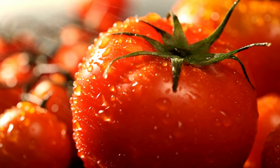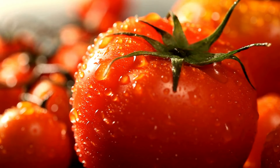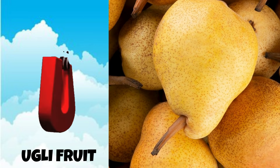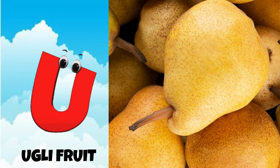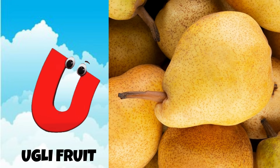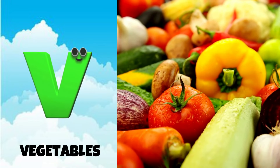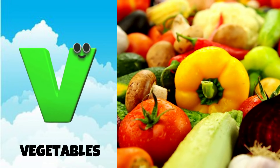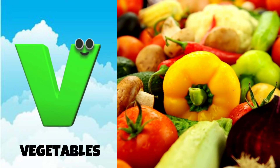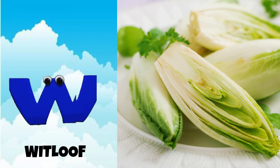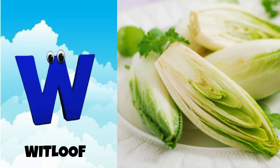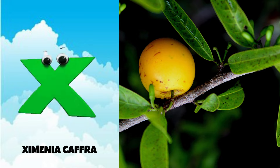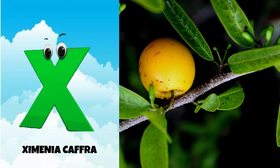U is for ugly fruit, uh, uh, ugly fruit. V is for vegetables, v, v, vegetables. W is for witloof, w, w, witloof. X is for Ximenia caffra, z, z, Ximenia caffra.